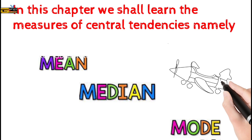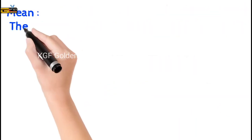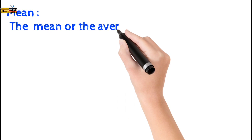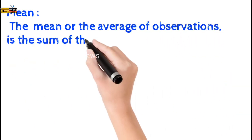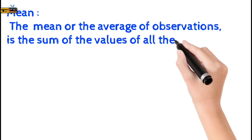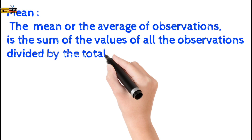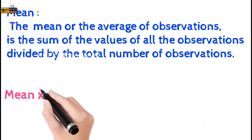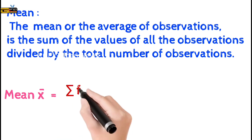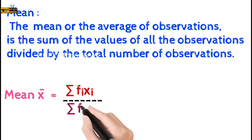Let us enter into the mode of learning. Mean — the mean or the average of the observations is the sum of the values of all the observations divided by the total number of observations. The formula for mean is given by: mean = σfixi divided by σfi.